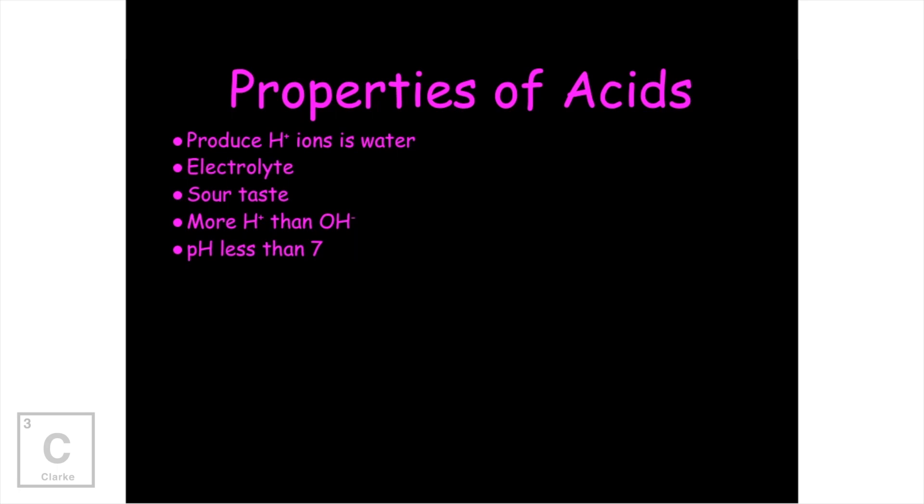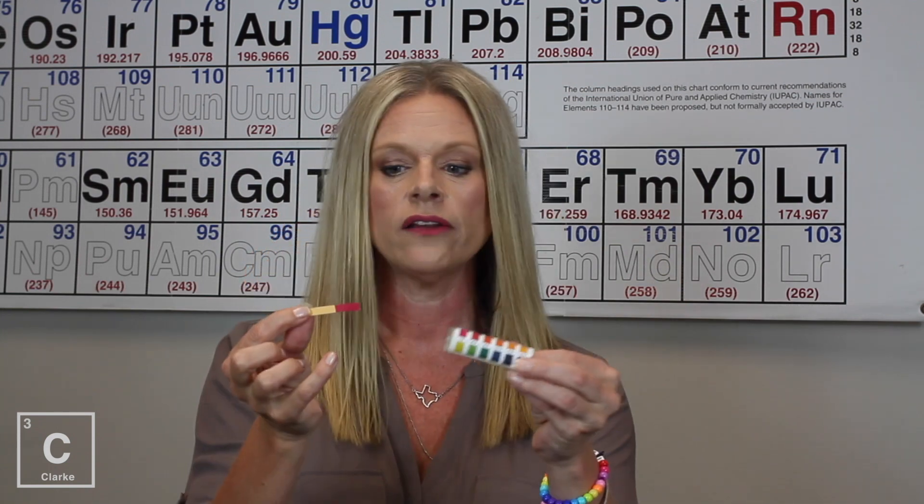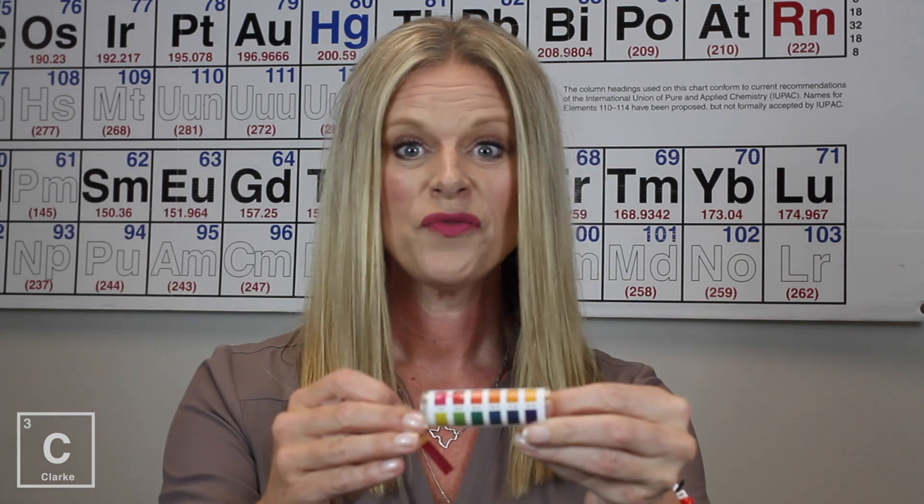The pH is a scale 1 through 14 where an acid is anything below a 7. Let's test this hydrochloric acid and see what pH it is. So I've got my pH tester strip, my hydrochloric acid. I'm going to dip it in. Oh, look at that bright, bright pink. Now let's, I'm going to come a little closer. Hopefully you can see this.